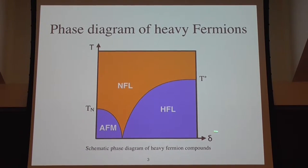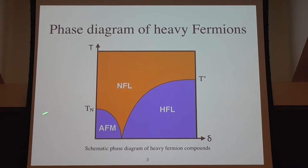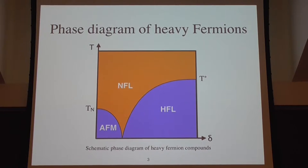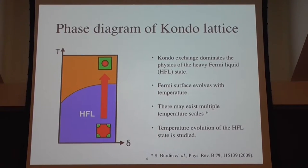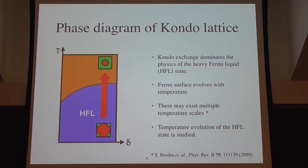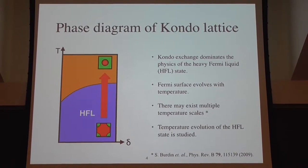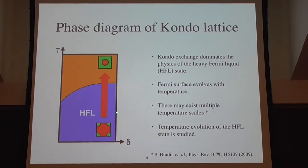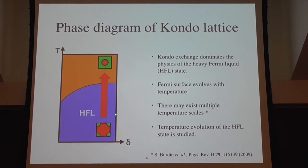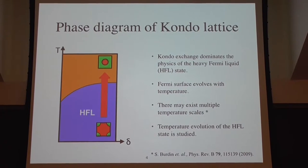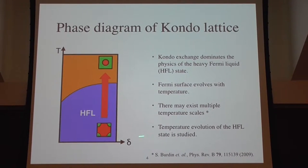In this research, we concentrate on the right-hand side of the phase diagram, which means the Kondo lattice effect dominates. If you look at the Fermi surface, because it is a metal, at low temperature the f-electrons are itinerant due to the Kondo lattice effect and contribute to the conduction, so it has a large Fermi surface. At high temperature, the f-electrons are local and do not contribute to the conduction, so it has a relatively small Fermi surface.